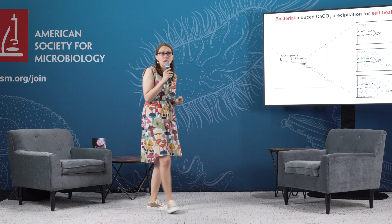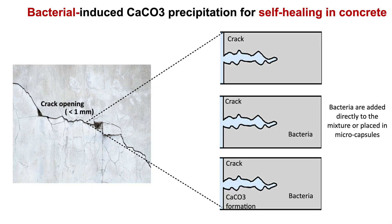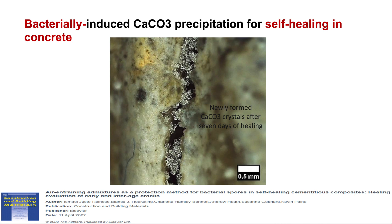Another common application of biocementation by ureolytic bacteria is self-healing in concrete. Concrete has low tensile strength, it is quite brittle, and it is very prone to cracking. So we can introduce bacteria to promote the mineralization of calcium carbonate minerals to seal these cracks. Bacteria can be encapsulated or sprayed directly onto the cracks, and then over time, as the minerals form, they fill in those gaps — healing these materials.